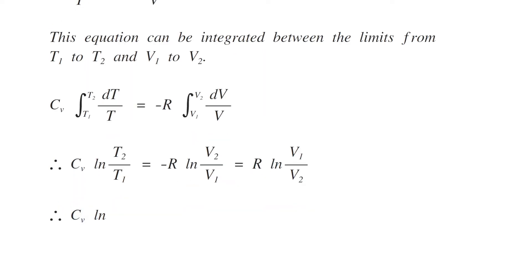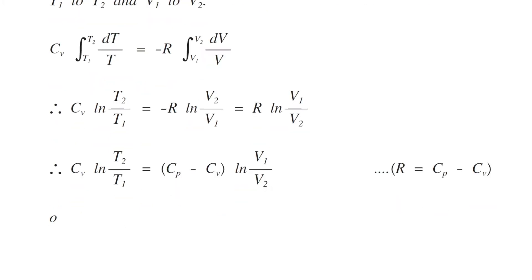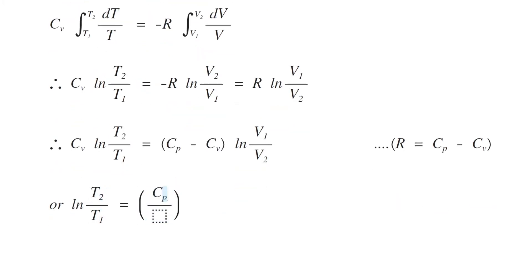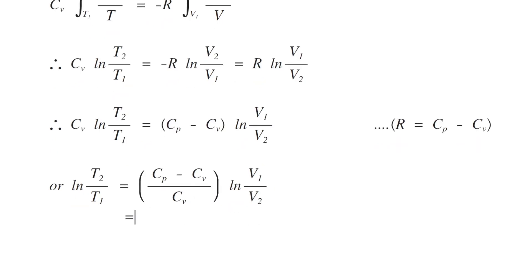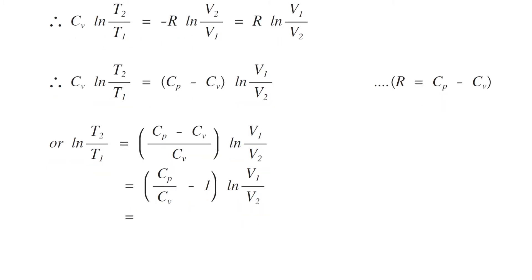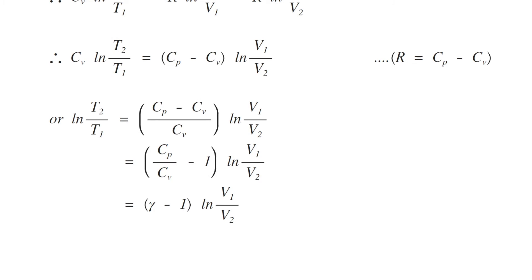Therefore, CV ln(T2/T1) is equal to (CP minus CV) ln(V1/V2), because R is equal to CP minus CV. This simplifies to (gamma minus 1) ln(V1/V2), where gamma is equal to CP by CV.